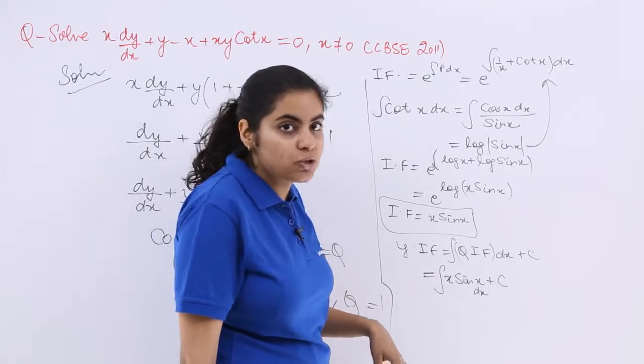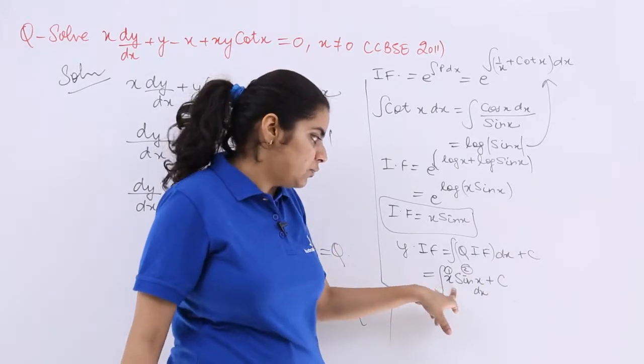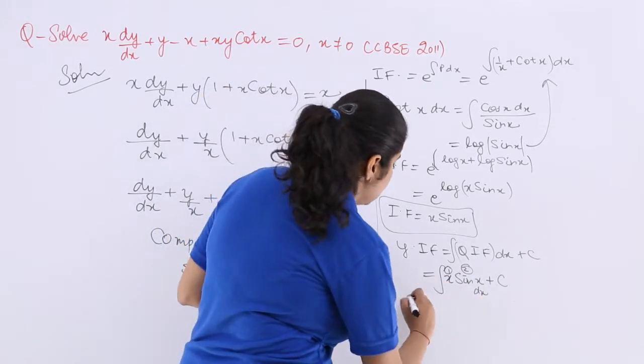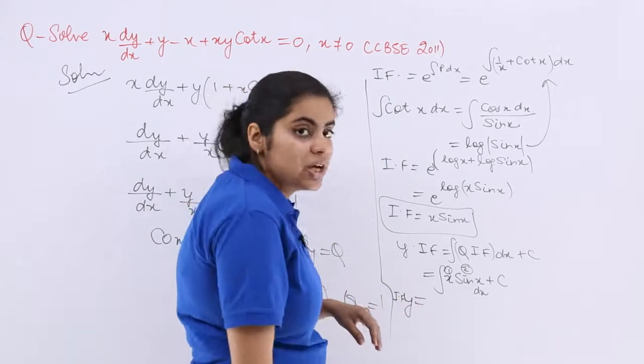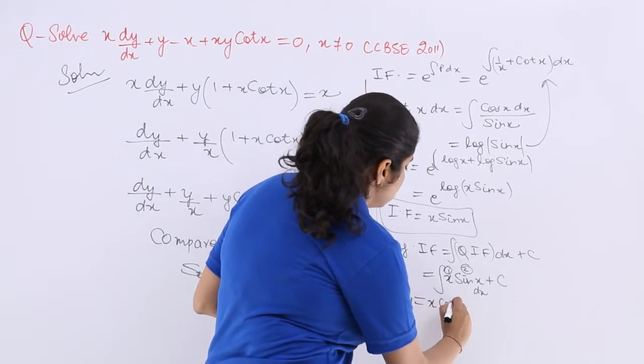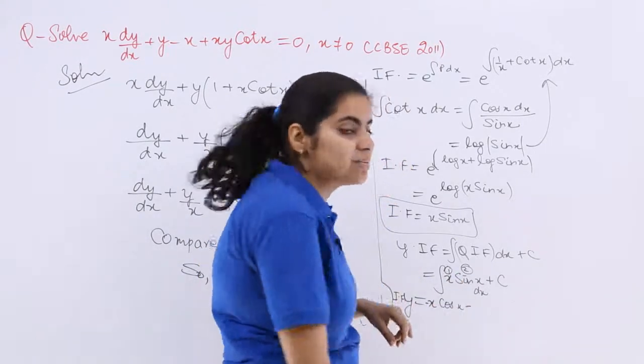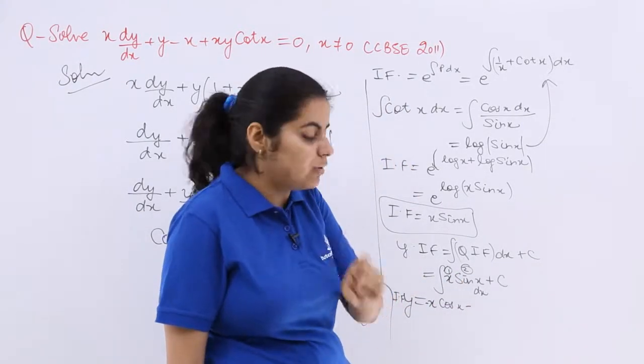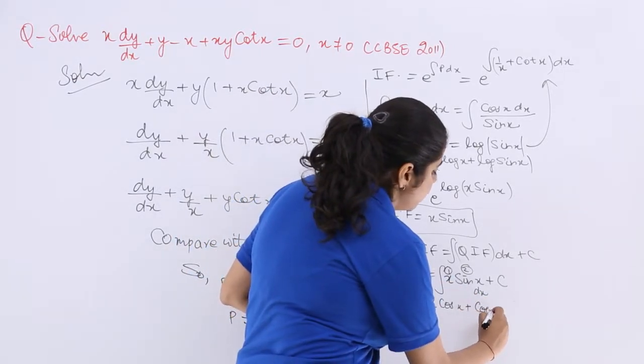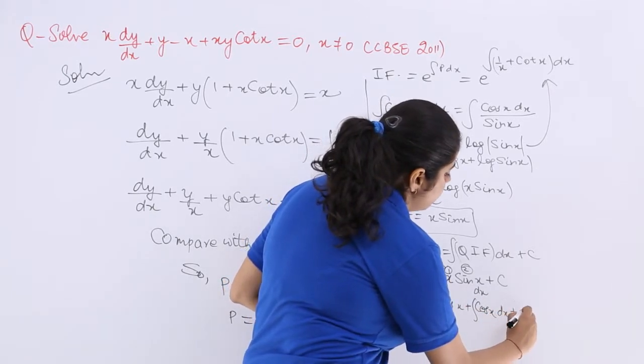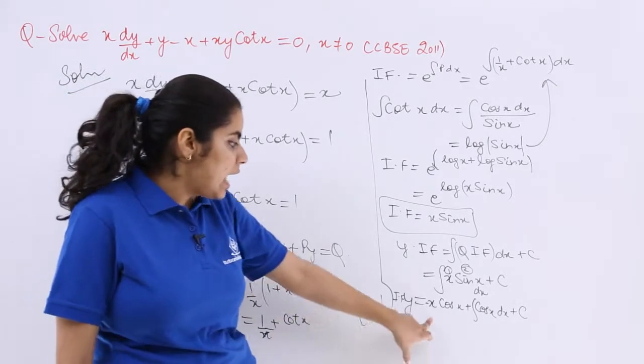Differentiation integration please do not forget dx and everything. Now what should be the first function and what should be the second? ILATE says this should be the first, this should be the second. So first function into integration of second, and here also it is IF into y. Right? First function into integration of second. Minus differentiation of first means minus differentiation of x with respect to x is 1, 1 into integration of second is minus cos x, and again whole integration plus c remains as it is.